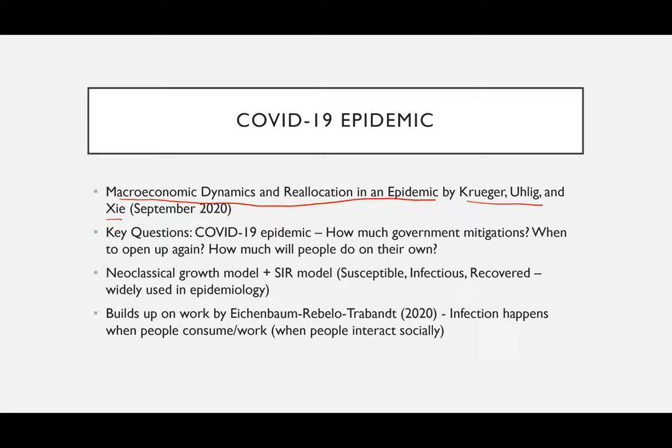I'll mainly be focusing on how they've used dynamic models. The key question that this paper tried to answer is about the COVID-19 epidemic: how much can the government mitigate the problems caused by the pandemic, when would be a good time to open up the economy again, and how many precautions would people take on their own. This model is basically a neoclassical growth model along with an SIR — susceptible, infectious, recovered — model, which is widely used in epidemiology.